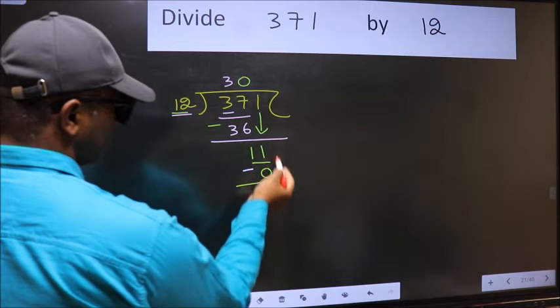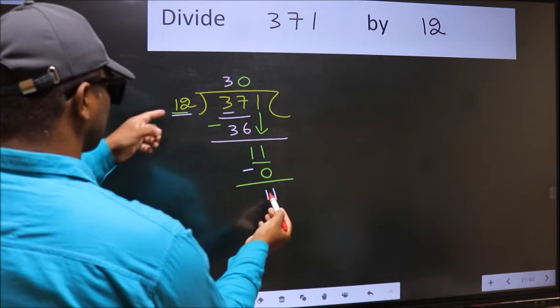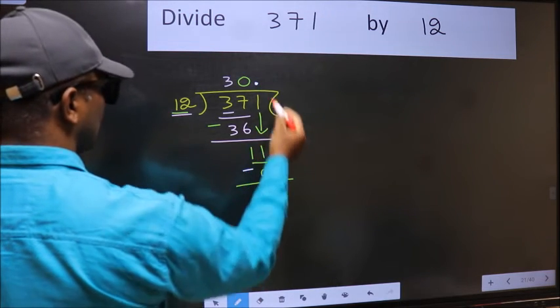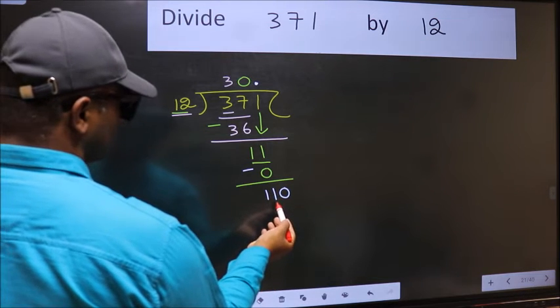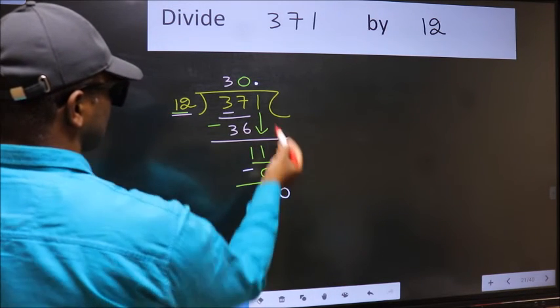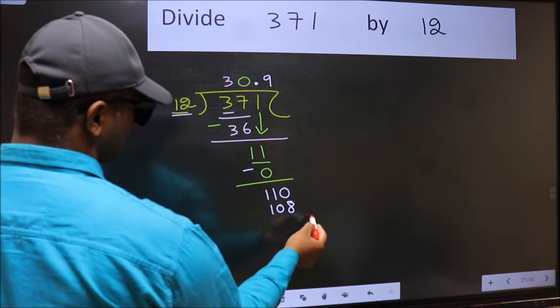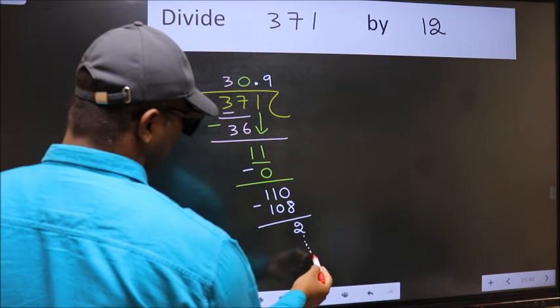Over here, we did not bring any number down, and 11 is smaller than 12. So now we can put a dot and take 0: 110. A number close to 110 in the 12 table is 12 nines, 108. Now we should subtract. We get 2, and you continue the division. I am not doing that.